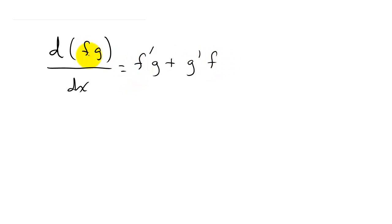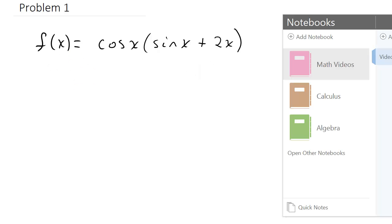So it's the derivative of the first times the second, plus the derivative of the second times the first. Let's look at some examples.